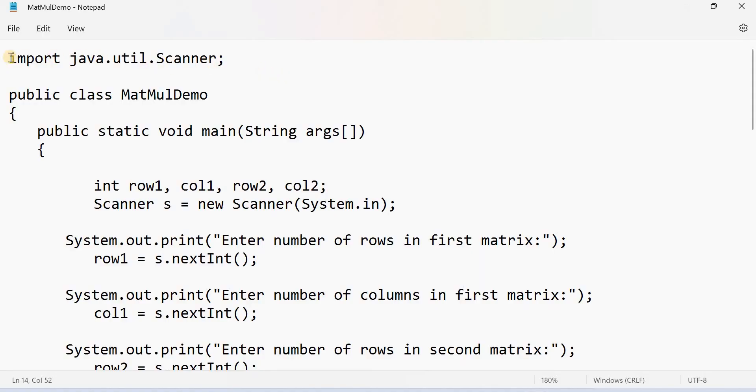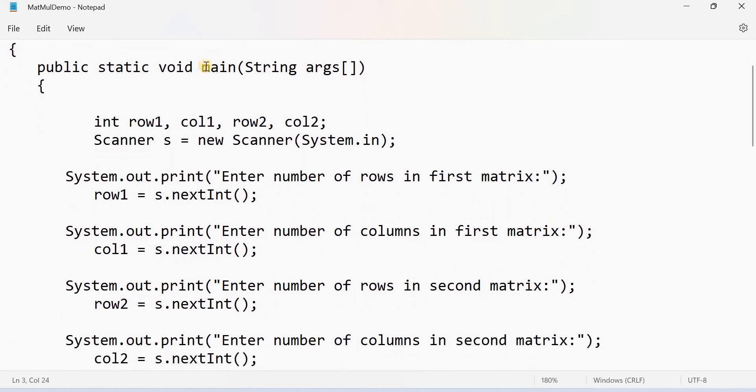Now let us see the program. First of all, import util package because we are using the scanner class to read the number of rows and columns. Name of the class is matrix multiplication demo and write the main method. Declare the rows and columns for matrix A and rows and columns for matrix B. Create the scanner object, so object name is S. What is the use of scanner object? It is used to read different types of inputs from the keyboard.